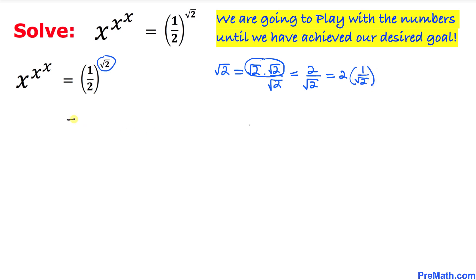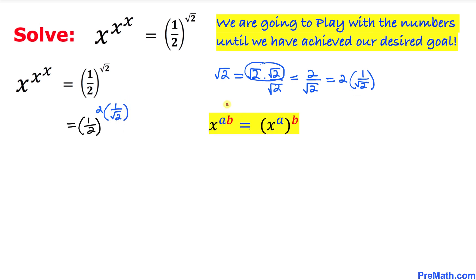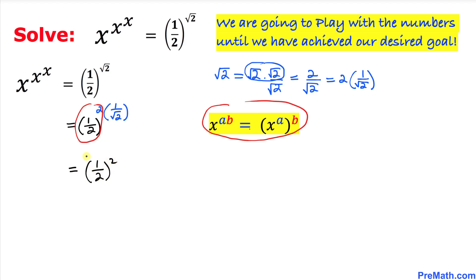This in turn could be written as 2 times 1 over square root of 2. So the right hand side of this equation could be written as 1 over 2, raised to the power of 2 times 1 over square root of 2. Now we can apply this rule of exponents, so this becomes 1 over 2 to the power 2, and then to the power 1 over square root of 2.